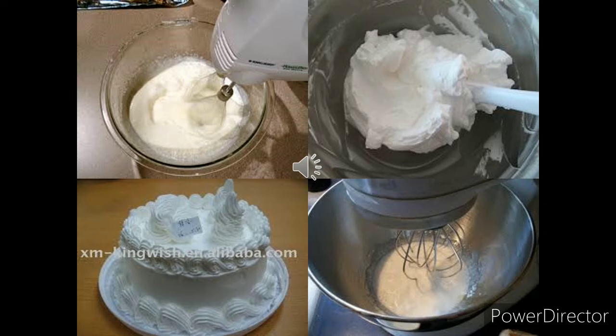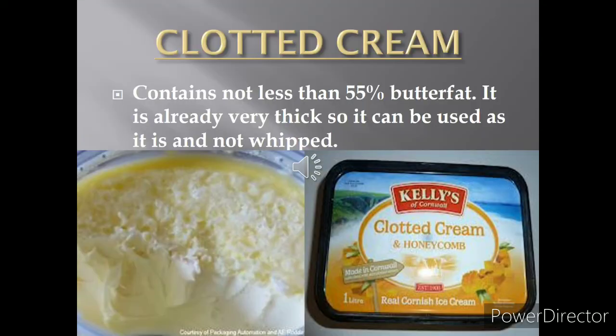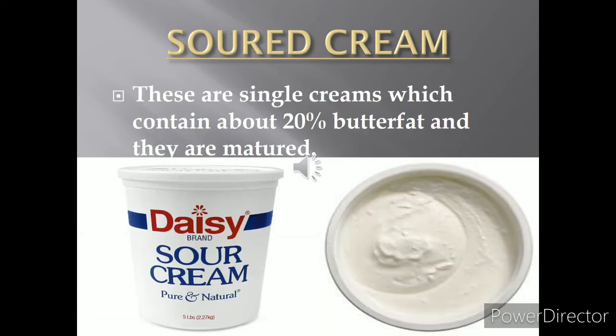Clotted cream contains around 55 percent butter fat. It is already very thick so there is no need to whisk it — it can be used directly. This cream can be used along with scones, served with fresh fruit, and used as a pouring cream, but it should never be used in cooking because it can separate on heating.